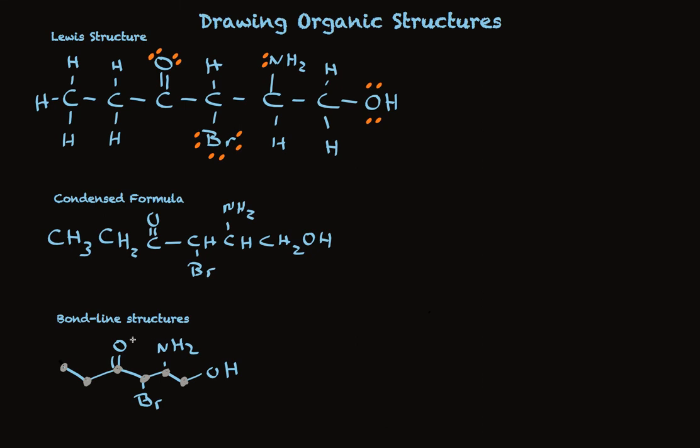The carbons are assumed to have enough hydrogens so they have a filled outer shell. And that's something you assume after all the other special atoms are drawn in, the halogens and the oxygens and nitrogens, which we call heteroatoms because they're different.